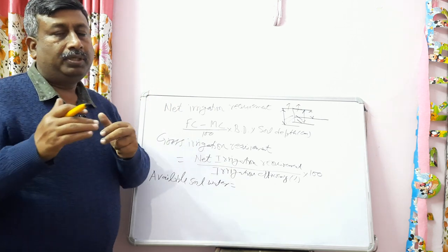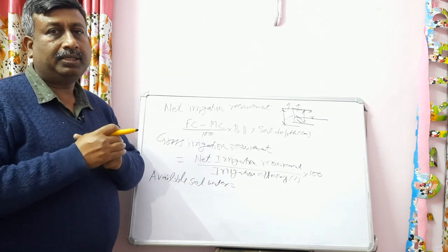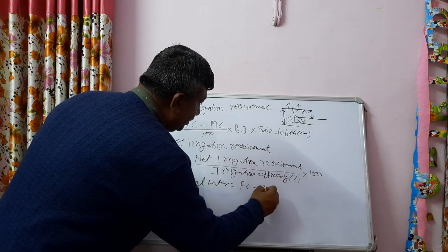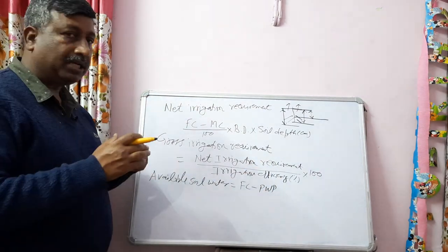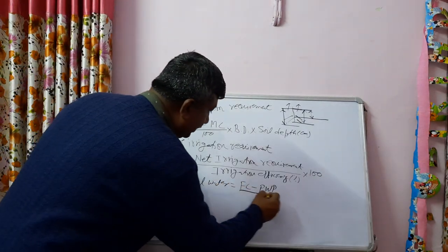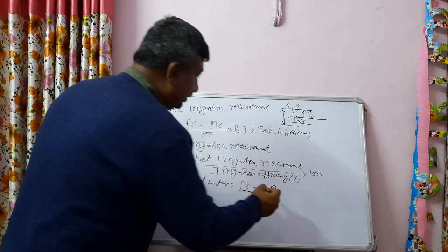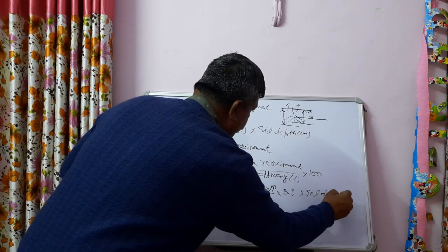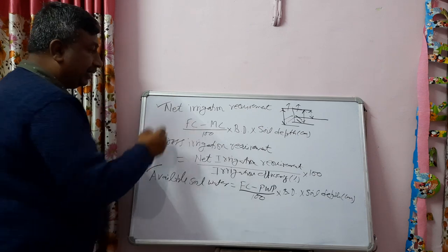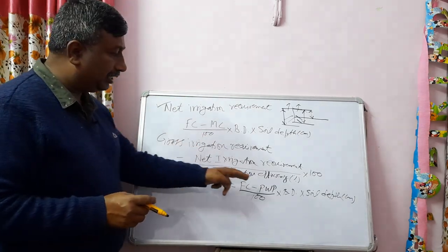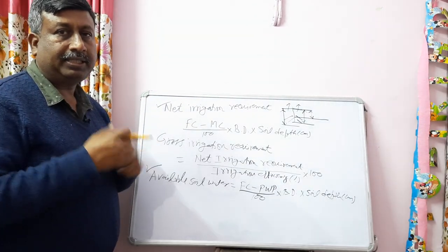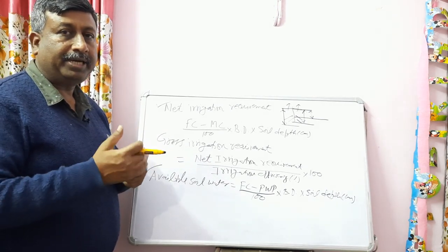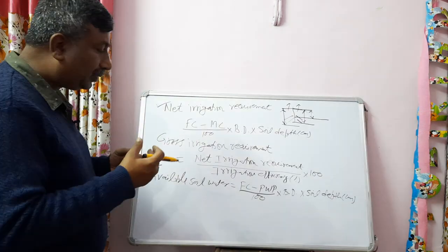The permanent wilting point is the lower limit of available soil water — below this, plants cannot extract water. Field capacity is the upper limit. Available soil water (ASW) = field capacity minus permanent wilting point. If we express this on a depth basis in centimeters, we divide by 100, multiply by bulk density, and multiply by soil depth in centimeters.